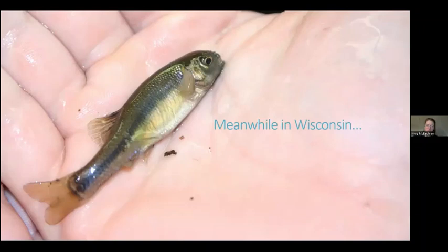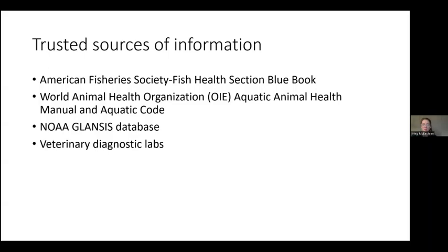I want to talk about the context of Wisconsin and the upper Midwest. First, I want to point your attention to places where you can get information about fish pathogens. For the United States, the American Fisheries Society Fish Health Section produces the Blue Book, which is a diagnostic manual with tons of information about symptoms, epidemiology, and general distribution of diseases — entirely available online. The World Animal Health Organization produces the Aquatic Animal Health Manual and Aquatic Code, also available entirely online, covering marine and freshwater diseases.